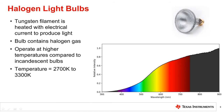Halogen light bulbs replace the inert gas in incandescent bulbs with a halogen gas and typically operate at temperatures over 2,700 degrees Kelvin. This produces a spectrum that is slightly shifted to the left, containing more of the lower wavelengths of the visible region. These lower wavelengths are more blue in color and shift the yellow color slightly closer to white.